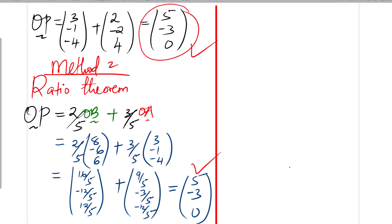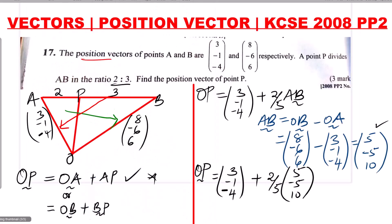So we have found the position vector of P using the ratio theorem and also using the first method. You can choose whichever method you understand better or find easier.